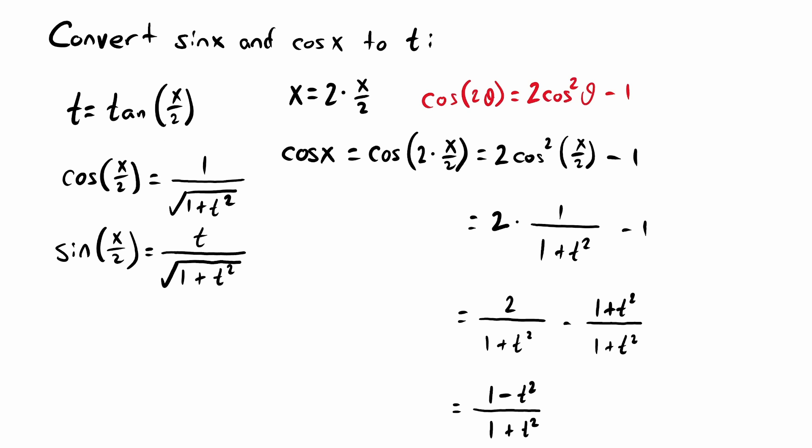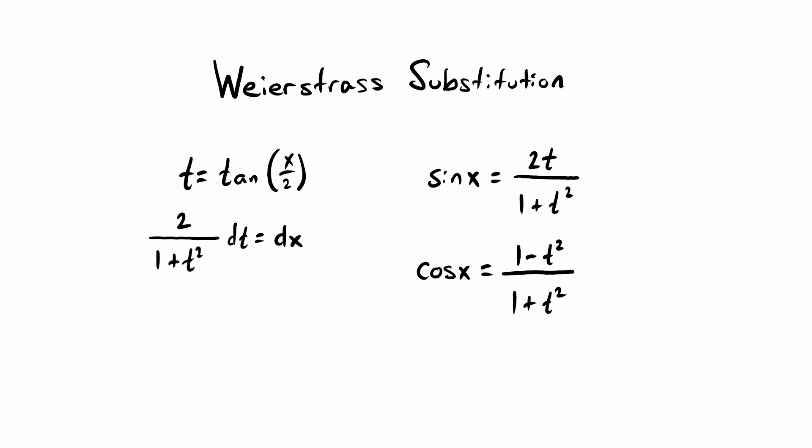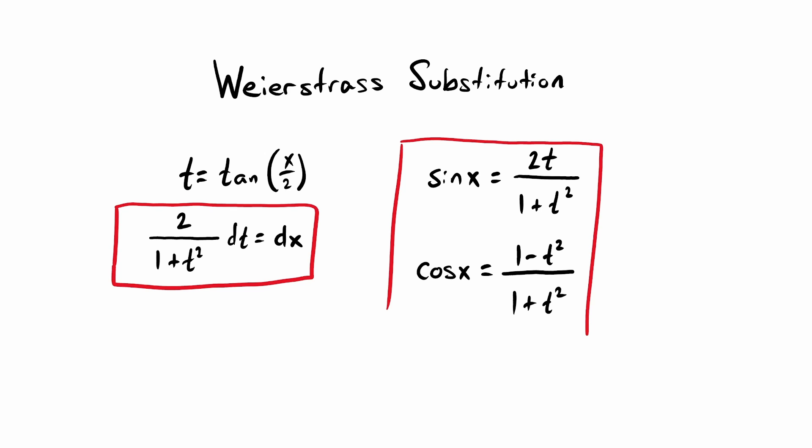Now let's summarize the conversions for cosine of x and sine of x, and then we'll put this all to use with our first example. At this point, we have everything we need to go through Weierstrass substitution. The only things you really need are your conversion for dx in terms of t, and your conversions for sine and cosine of x to t. You might want to write these down before we get to our first problem.